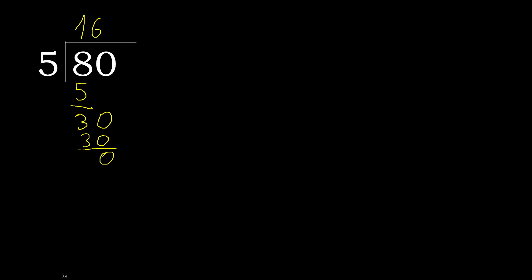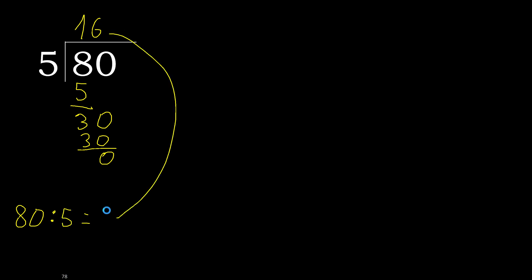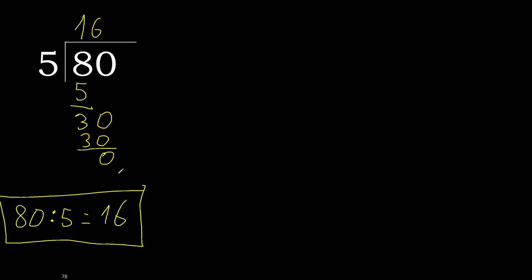There is no remaining number, therefore we finish here. 80 divided by 5 is 16.